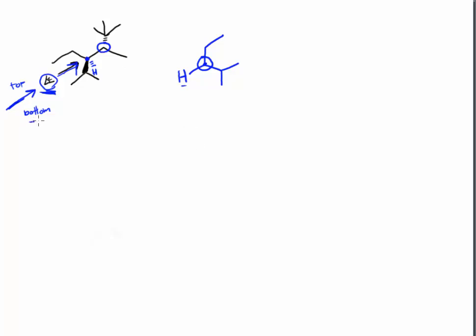Now we draw the back carbon. Looking along the arrow, on the bottom of the arrow is this methyl group, so that goes straight down. Above the arrow, on the dashed line, is the t-butyl group. And then the hydrogen that's not drawn in the first drawing gets put in as well. We always draw hydrogens on our Newman projection if they are attached to the carbons of interest.